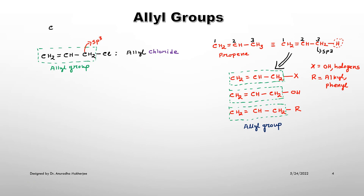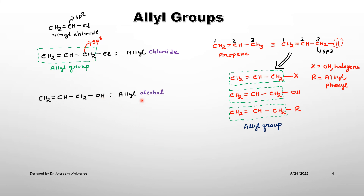Suppose we compare vinyl chloride with allyl chloride. In vinyl chloride, the carbon bearing chlorine is SP2 hybridized. But in allyl chloride, the chlorine is connected with the SP3 carbon, not with the SP2 carbon. Similarly, in allyl alcohol, the OH is connected with the SP3 carbon. In vinyl alcohol, the OH is connected with the SP2 carbon. This is the main difference between the allyl group and the vinyl group.